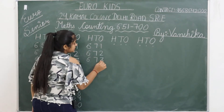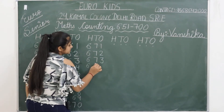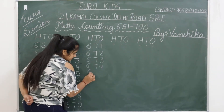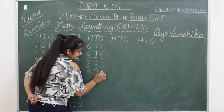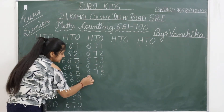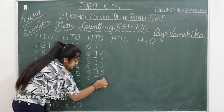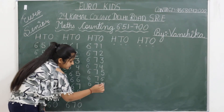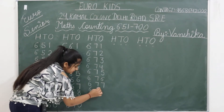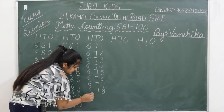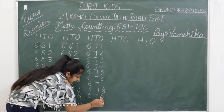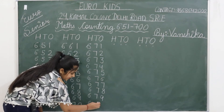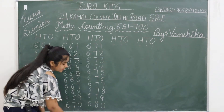672. 673. 674. 675. 676. 677. 678. 679. Now what comes? 680.